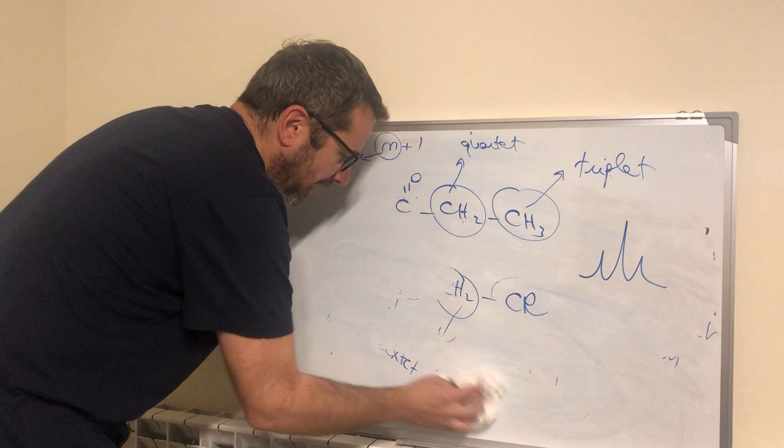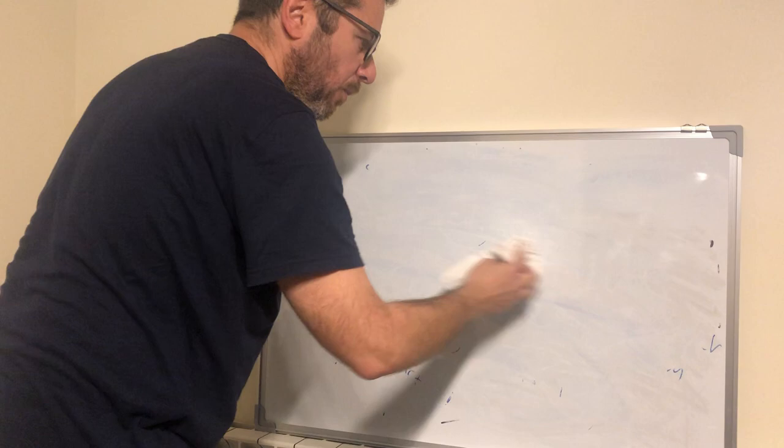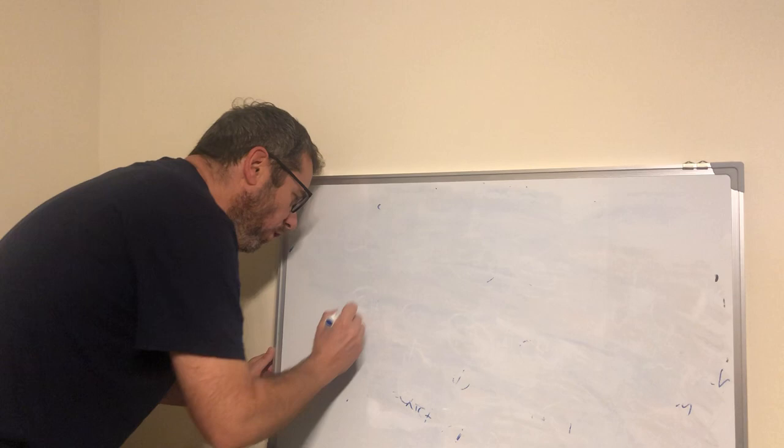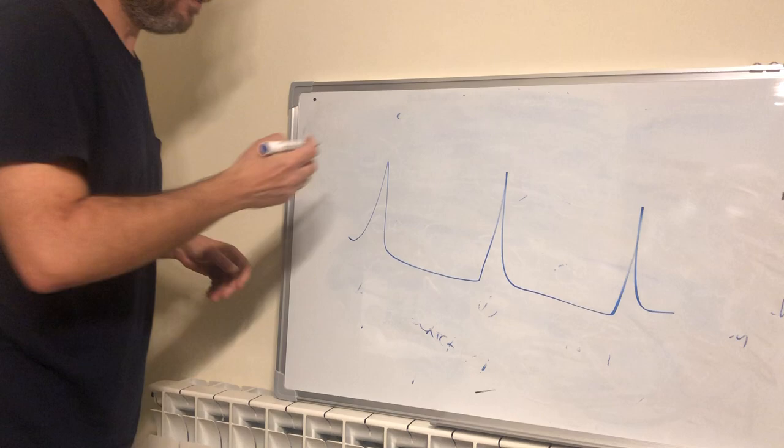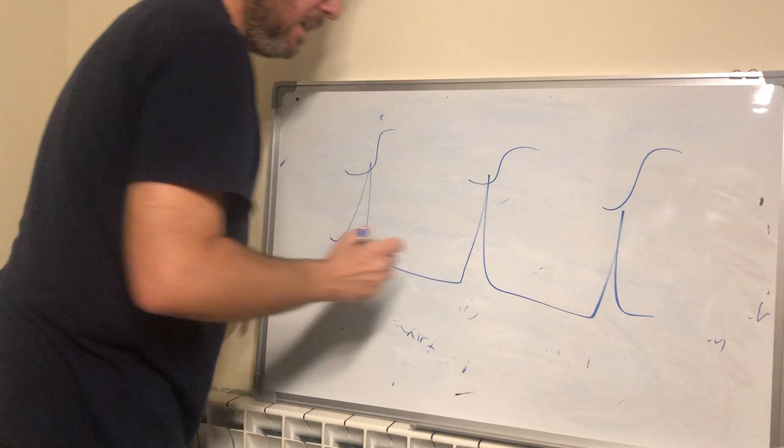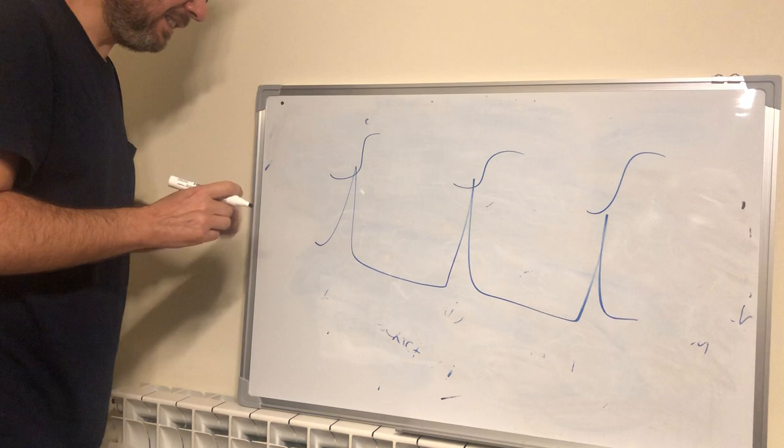Now we will move to the integration. Fourth parameter. So, three parameters. One, type of protons, magnetically equivalent. The type of proton will give you the number of signals. Two, position of signals. Three, the shape of signals. The integration. Now, you can observe like this a spectrum and you can observe above it like this. This is the integration and it is proportional to the number of protons under each signal.